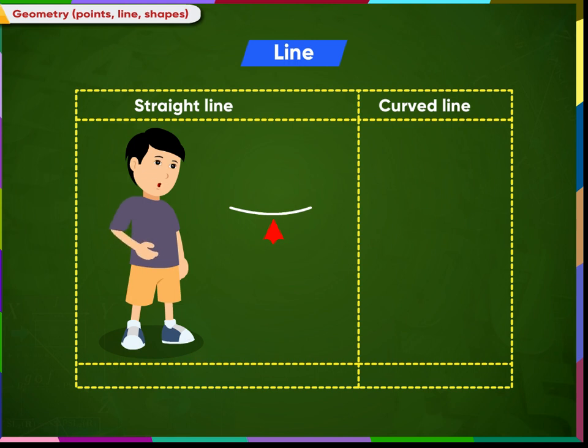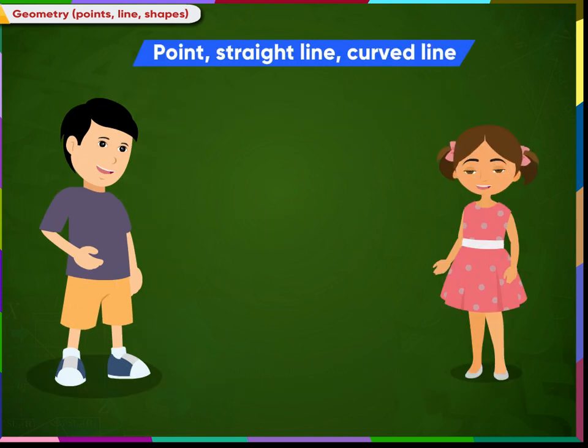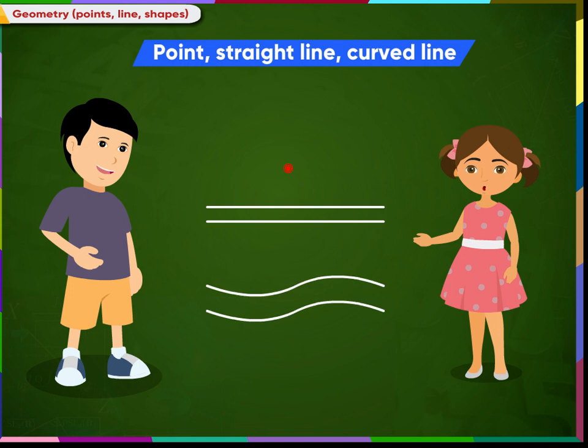So this line is called as a curved line. I have now understood a point, a straight line, and a curved line. This is a point. This is a line. These are curved lines. These are straight lines.